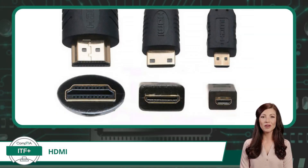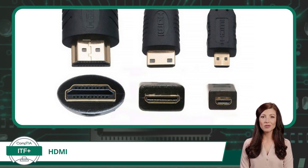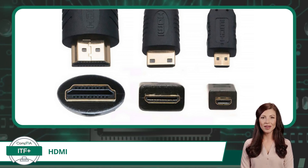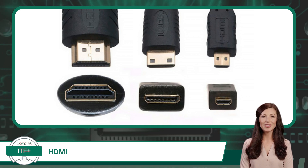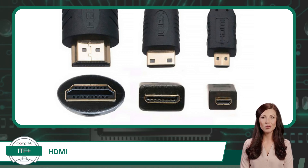The HDMI graphic device interface standard's connectors come in three different sizes to accommodate various devices and their space limitations. The standard HDMI connector, shown on the left, is the most common and is found on most consumer electronics such as TVs, Blu-ray players, and gaming consoles. Smaller devices like tablets, smartphones, and some cameras often use the smaller mini-HDMI connector, shown in the middle, or the micro-HDMI connector, shown on the right.